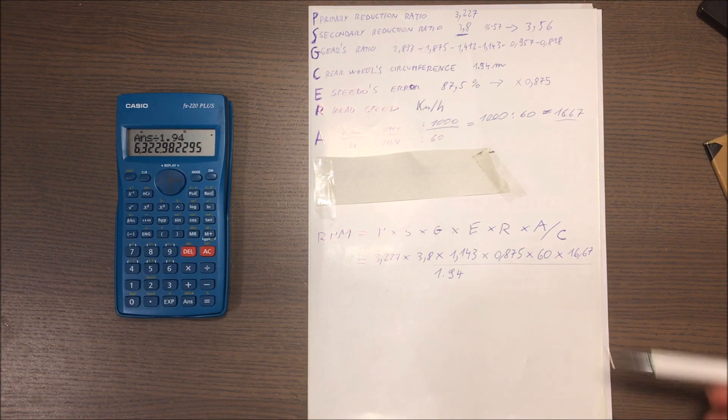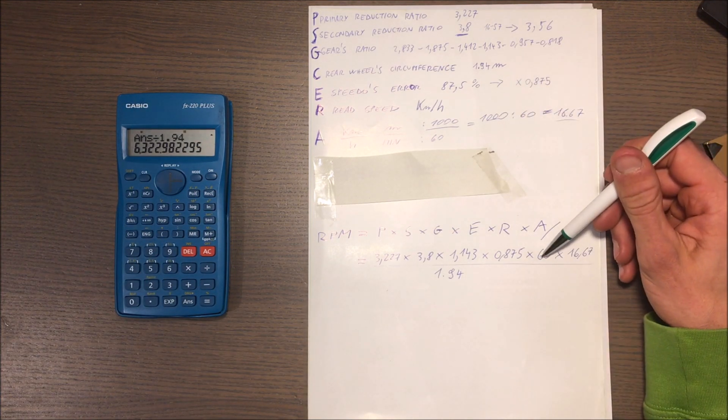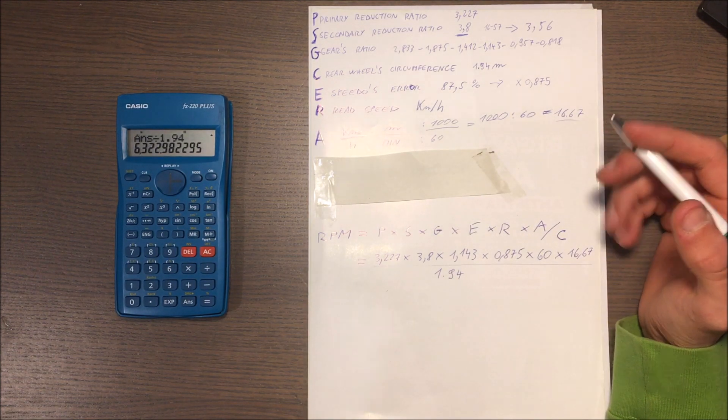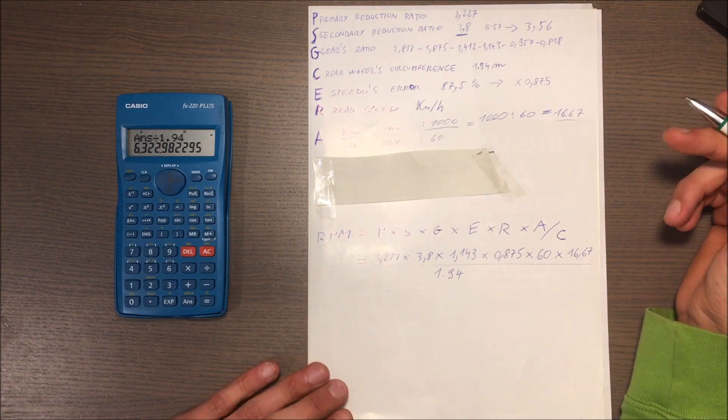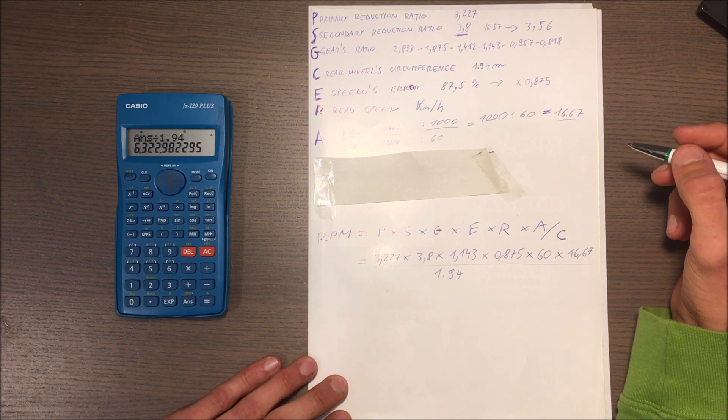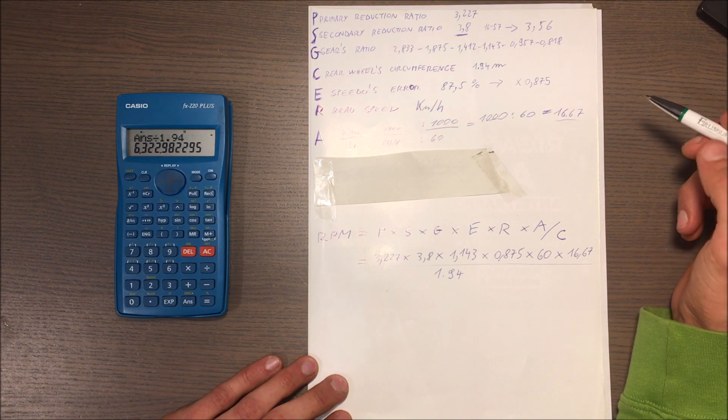6322 RPM in fourth gear at 60 kilometers per hour. So let's say for example my top speed is 140 kilometers per hour read on the speedo.